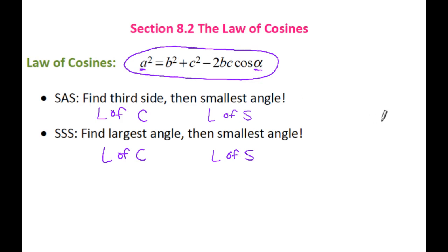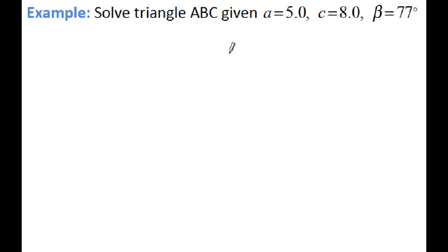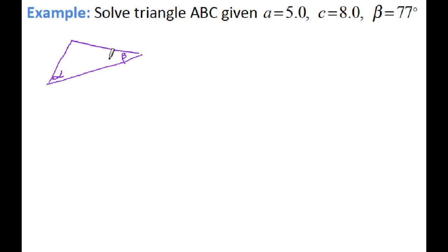So let's go ahead and use law of cosines to solve a triangle. Solve triangle ABC, given that side A is 5, C is 8, and beta is 77 degrees. I'm going to go ahead and sketch my triangle. We don't know alpha, but we do know beta which is 77 degrees. We know side A is 5.0 and side C is 8.0, so we're missing gamma and we're missing side B. So we have the side-angle-side scenario.